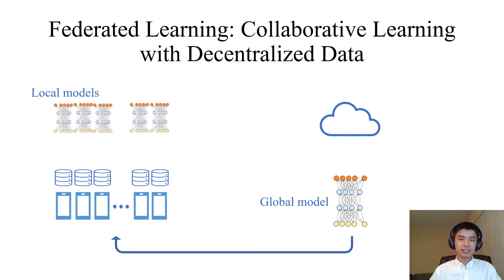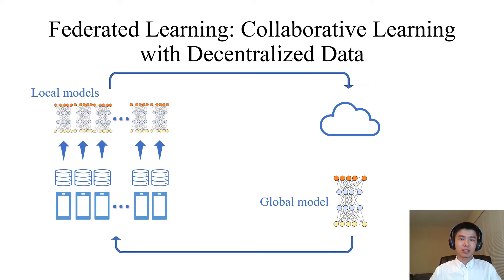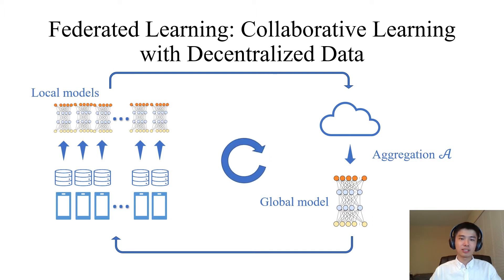In the second step, the workers train their local models using their own local training data, and the new local models after training are sent to the master. In the third step, the master aggregates the local models to obtain a new global model using some aggregation rule. These three steps are repeated until a stopping condition is met, for example, convergence.